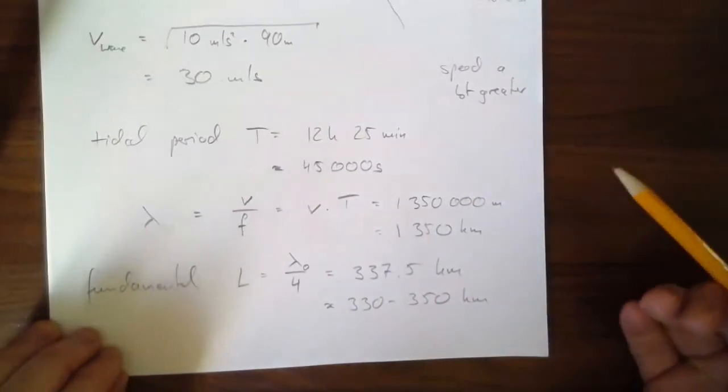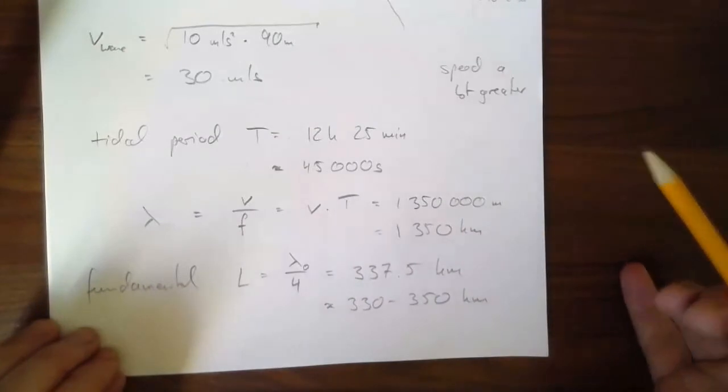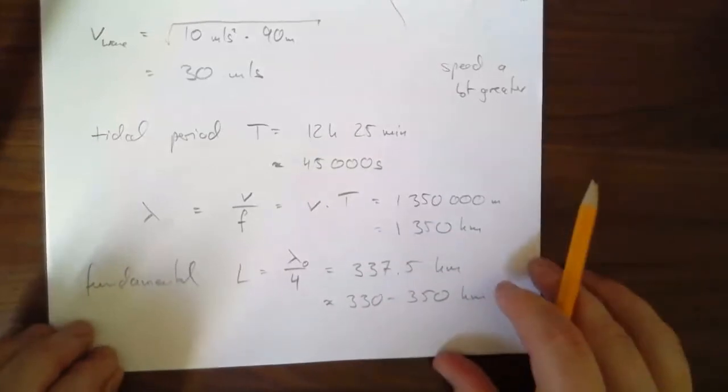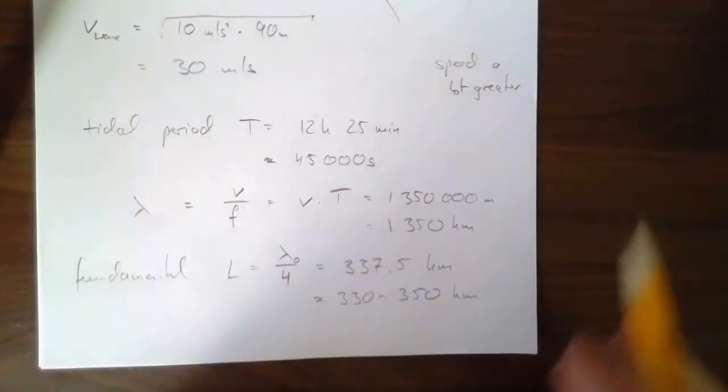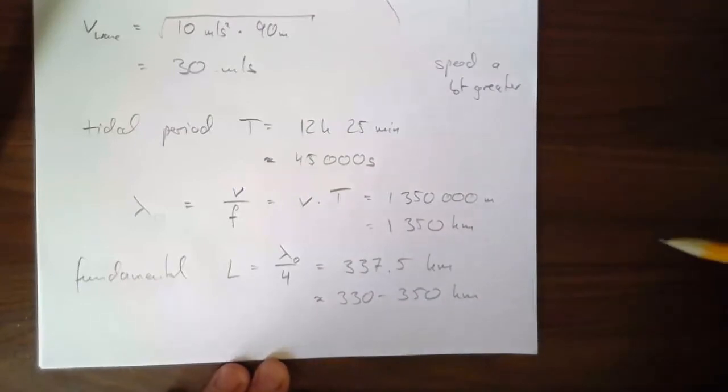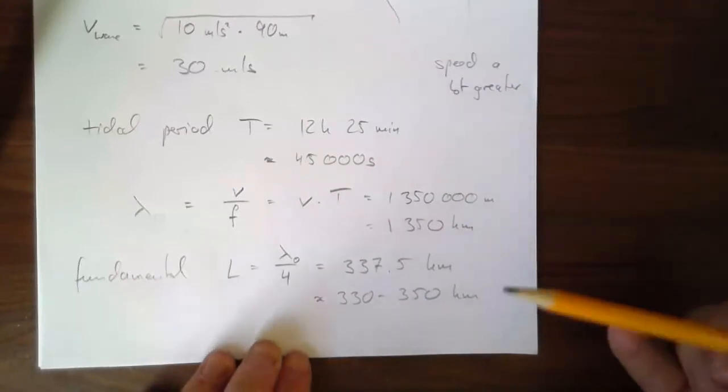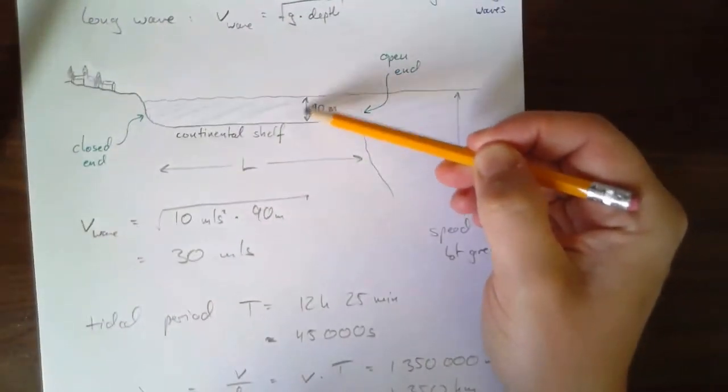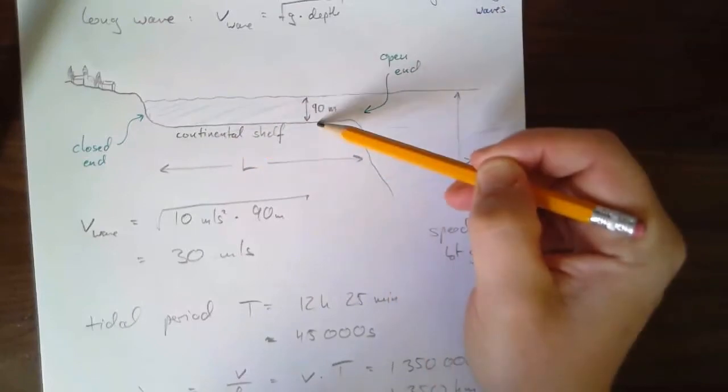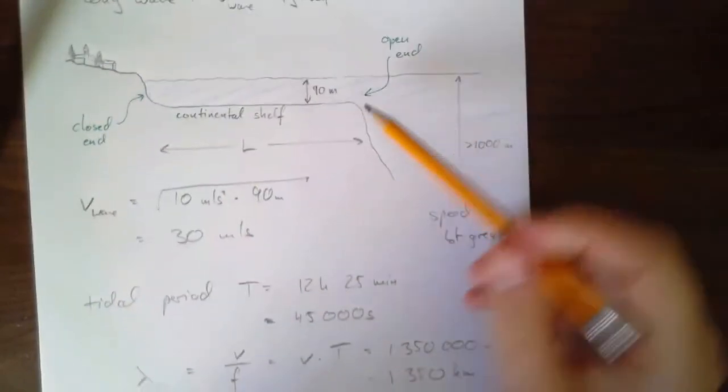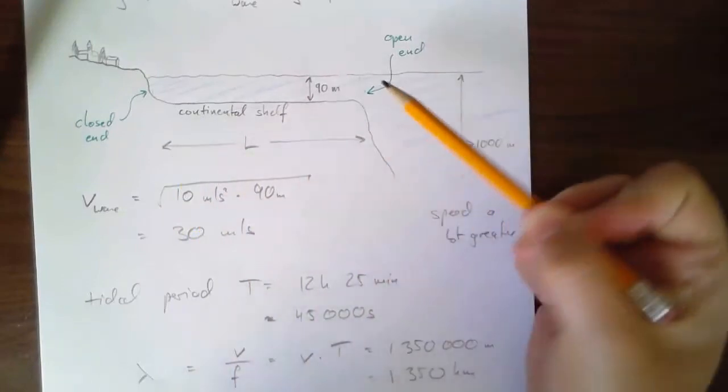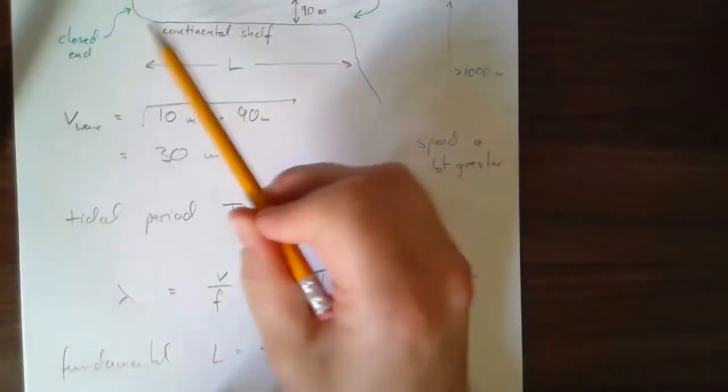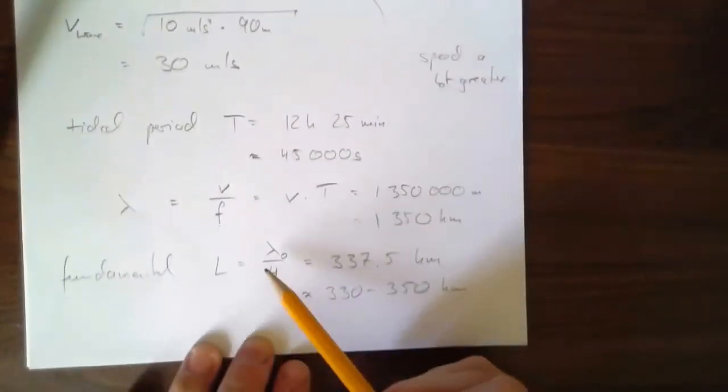So places in the world where the tides are particularly big, famous ones are the Bristol Channel in the west of England, the Bay of Fundy near Nova Scotia off the eastern Canadian coast. They're known to have really high tides. Why does that happen? Because the conditions line up just right. The depth of the sea where the continental shelf is determines the speed, matches the length in such a way that the resulting standing wave forms. The fundamental, usually.